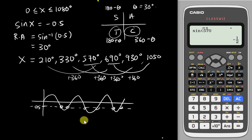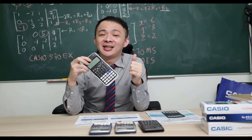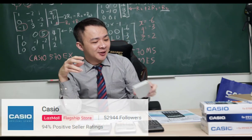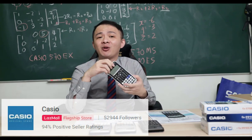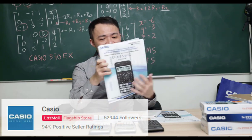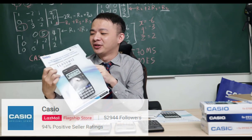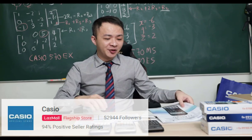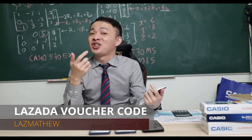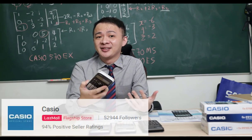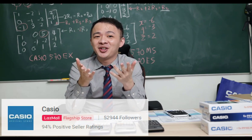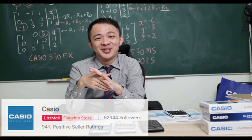This is how you use the calculator to find as many angles as possible. If you're interested in buying this calculator, I'll share the Lazada link in the description below — it goes to the Casio flagship store. Casio Malaysia is running a promotion where they'll give you a free Casio L-File with purchase, and entering the promo code in the description gives an extra 5 ringgit discount. If you have any questions, post them in the comments below — see you in the next video!